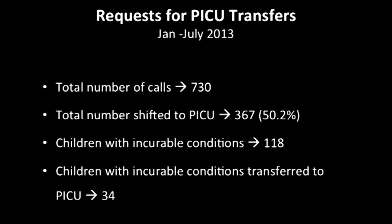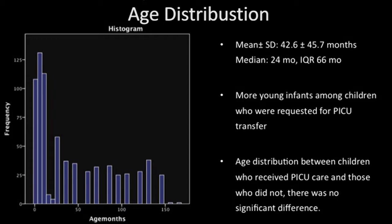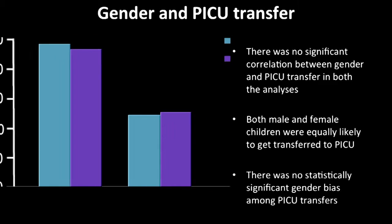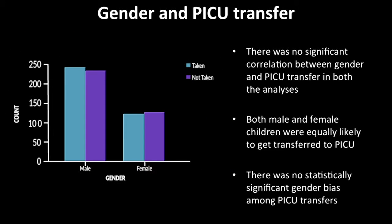I have taken 730 patients' transfer requests that we had this year. Out of these, we were able to shift almost half, which is much better than before — this is because of an expansion in the size of the ICU. Most of these are infants, but we do not differentiate between infants and older children. The number of patients based on gender and age are similarly taken into the ICU.